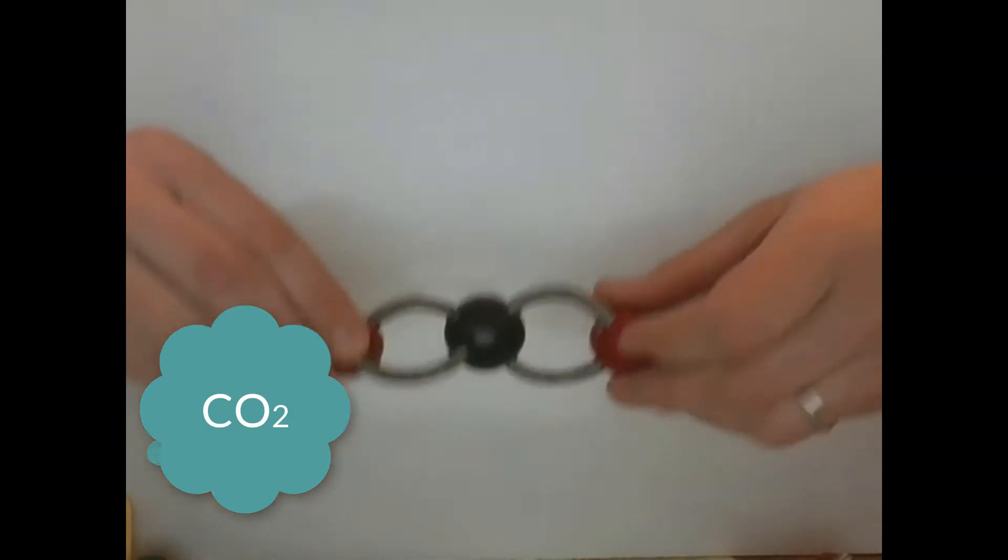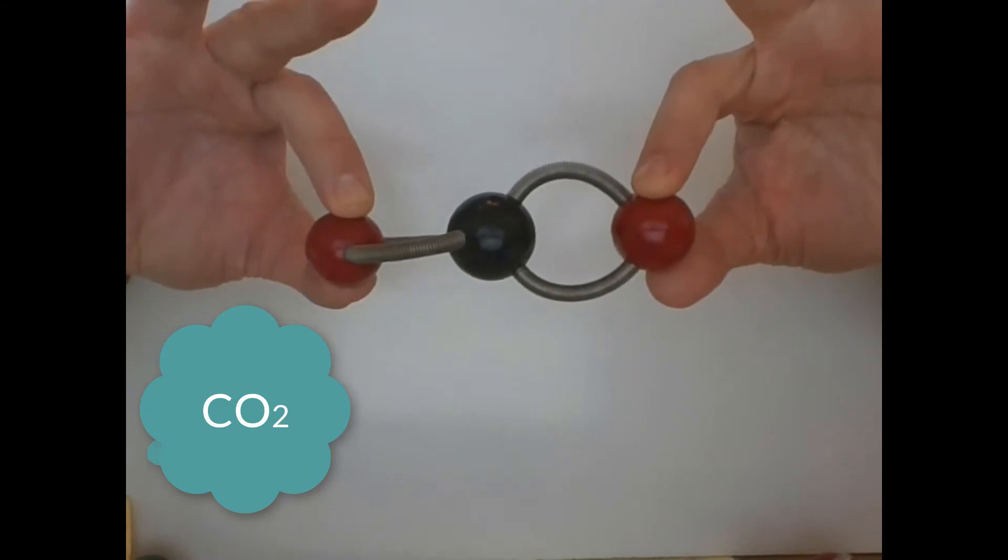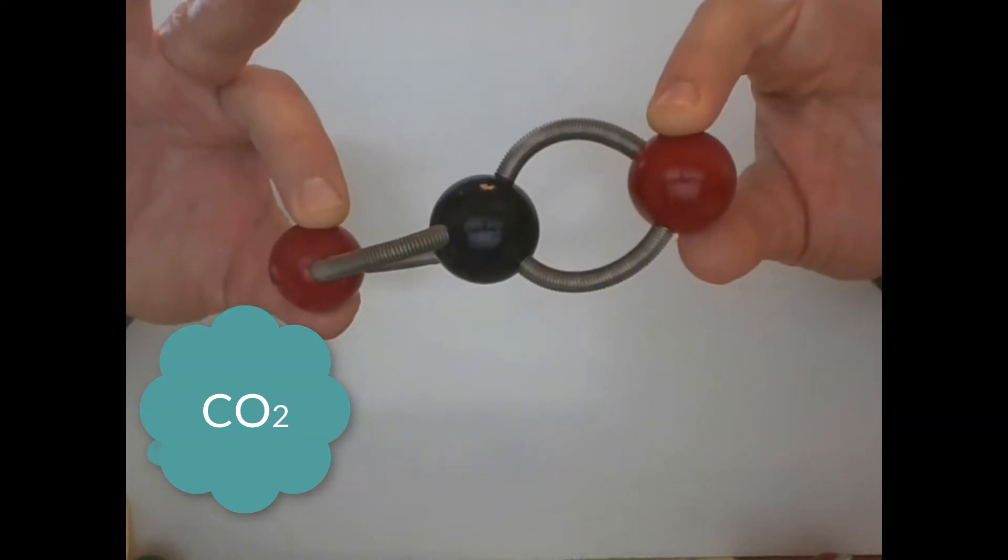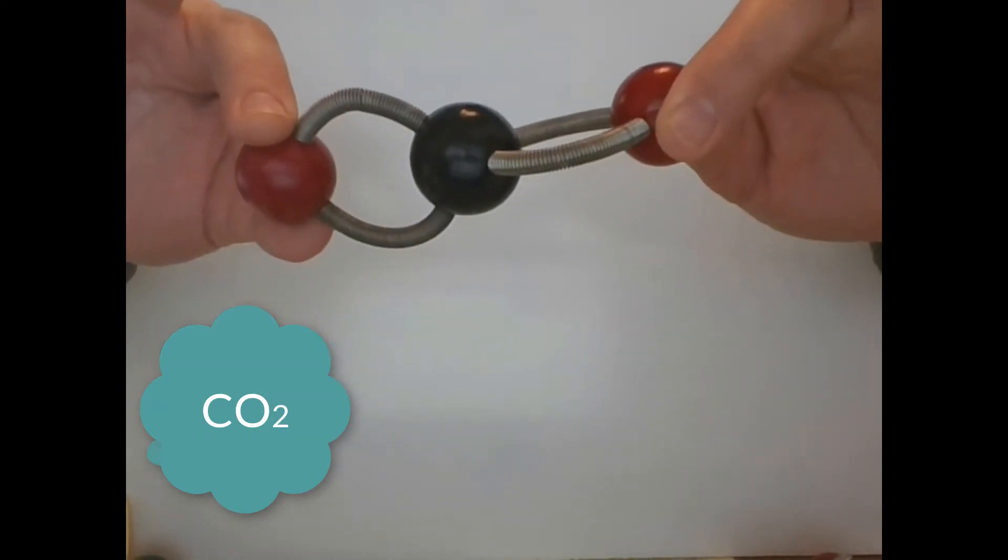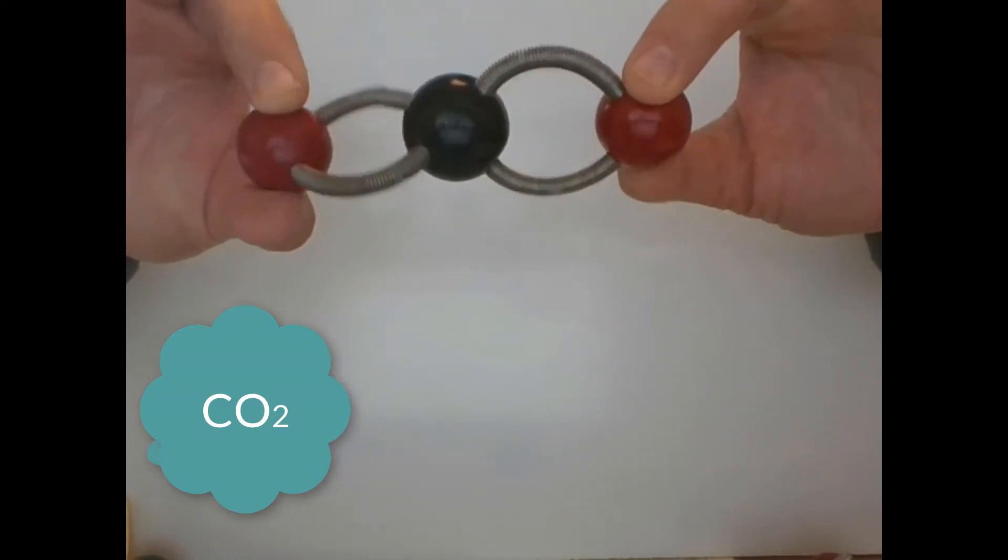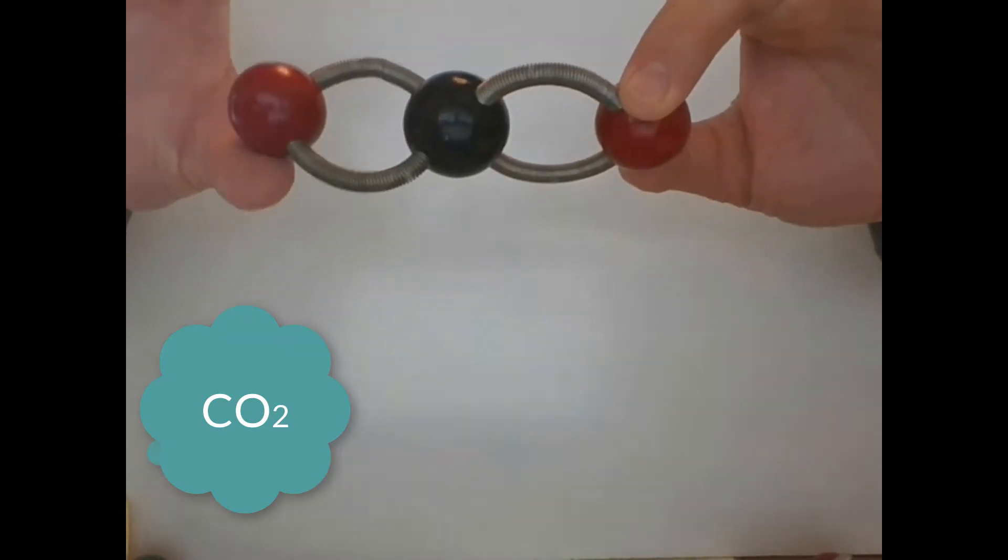Carbon dioxide looks like this. Notice that there are two sets of springs on both sides, so we have two double bonds in there.